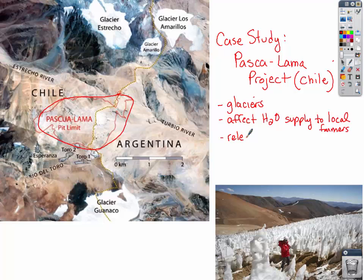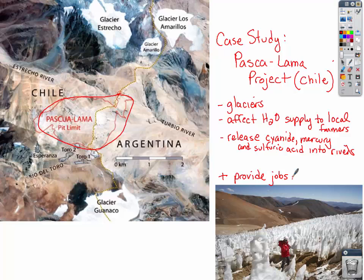This mine also has the potential to release things like cyanide, mercury, and sulfuric acid into rivers. But projects like this provide jobs, and that goes a long way. The project has not been approved by the government of Chile — there's a lot of controversy and struggle to find funding, so it's on the back burner. Argentina is in full support, but Chile is more hesitant due to the rumored environmental impact. They've even proposed they can relocate the glaciers that would be impacted — take what they'd impact and move it to add to another glacier.